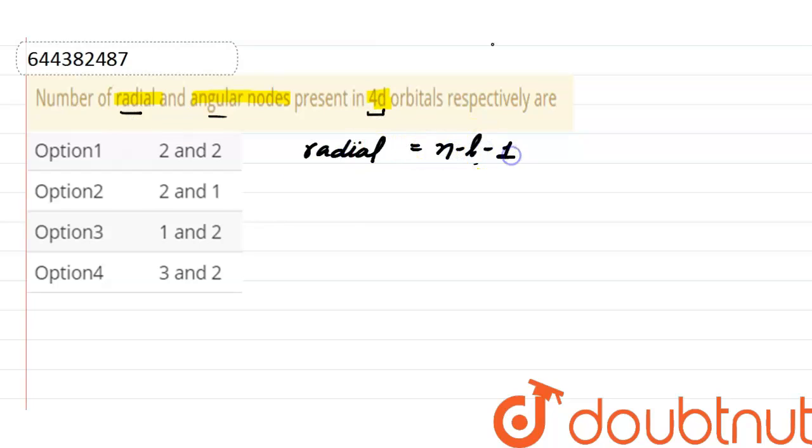Here the value of n is 4, and the value of l for d orbital is... 0, 1, 2, 3 - these are the values for s, p, d, and f orbitals respectively. These are the values of l.